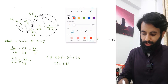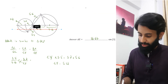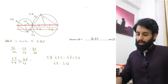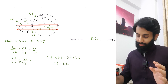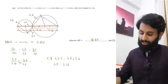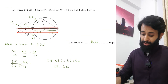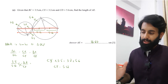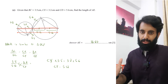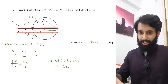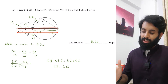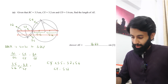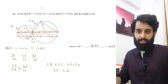So AE equals 5.12 × 2 plus 3.2 × 2, which gives 16.64. That's the length AE. Questions like these combining angle properties of circles with similar triangles are common in Paper 2, so make sure you practice this concept well. That's all for this video — see you in the next one, take care!